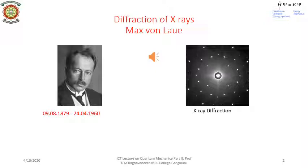From the study of optics, we know that wave properties are more easily demonstrated when the sizes of apertures and obstructions are of the same order as the wavelength of light. Von Laue suggested that crystals may act as a three-dimensional grating for the scattering of X-rays and produce observable interference effects. Von Laue, who received the Nobel Prize in 1914, designed the experiment and convinced two of his experimental physicist colleagues at Munich, Walter Friedrich and Paul Knipping, to perform the measurement. The picture in this slide shows the Von Laue photograph of the scattered X-rays from a crystal.